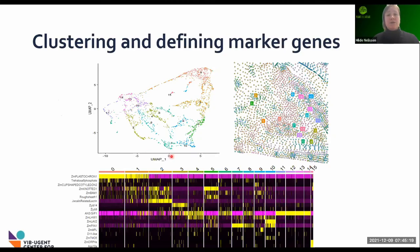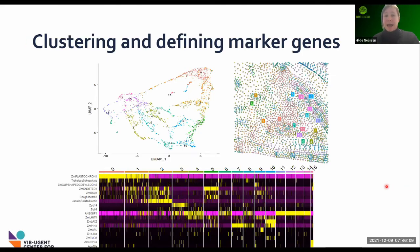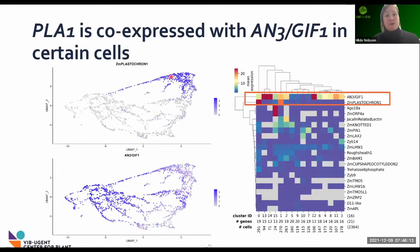This means we can start to use the spatial transcriptomics dataset to really make a clustering — a Seurat clustering very similar to single-cell clustering, but this time based upon our spatial transcriptomics data. Now we don't only have clustering, but we can map these clusters back to the spatial context of this section, where you see again the shoot apical meristem. This tool also allows us to nominate key marker genes for certain clusters. We see again that Plastochrome 1, our favorite gene, is a key gene for certain clusters we have identified, and with this we started to do a co-expression analysis.